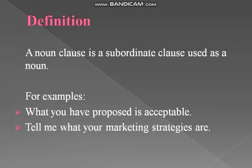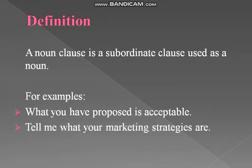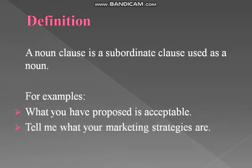For example: 'What you have promised is acceptable.' Here you can see — 'what you have promised' — 'you' is the subject, 'have' is a helping verb, and 'proposed' is a verb. It consists of a subject and a verb, but it is dependent on the rest of the sentence. 'Is' is a verb and 'acceptable' is an adjective. So 'what you have proposed' is a noun clause in this sentence.